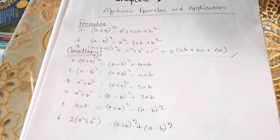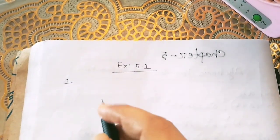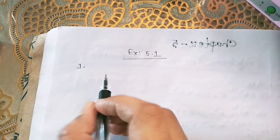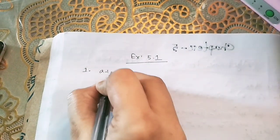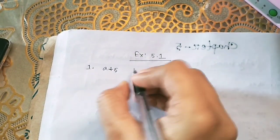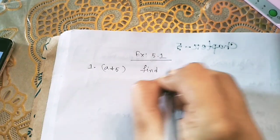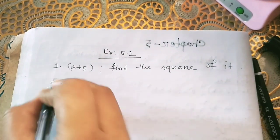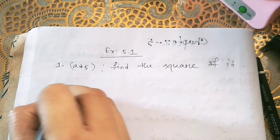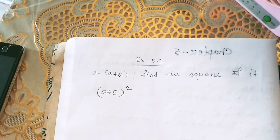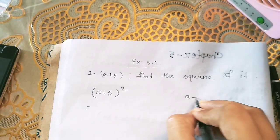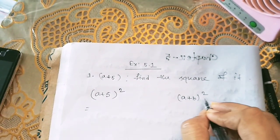So without any delay let's start. For showing the application of the formulae I will solve some problems from the exercise. Let's go to Exercise 5.1. I will solve the first problem of the exercise which is (a+5)². We are asked to find the square of the terms with the help of formulae, so we will rewrite the expression and apply the formula (a+b)² = a² + 2ab + b².